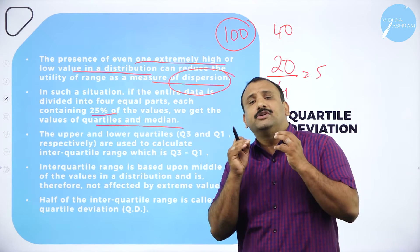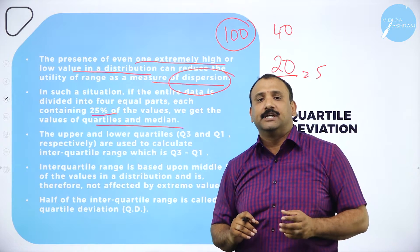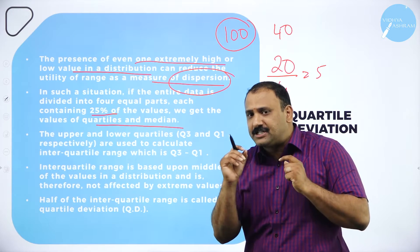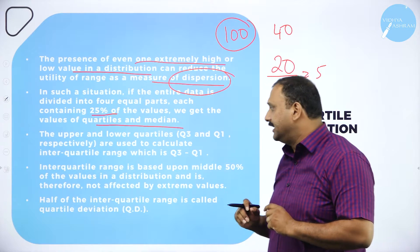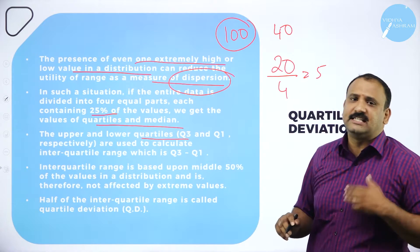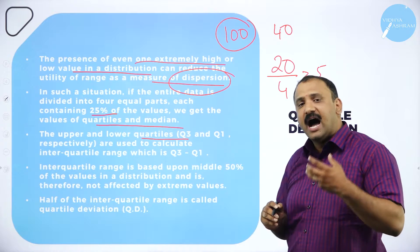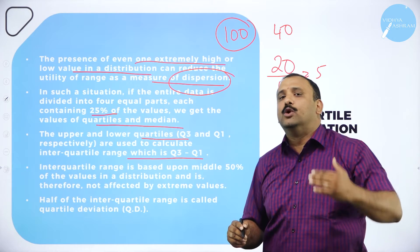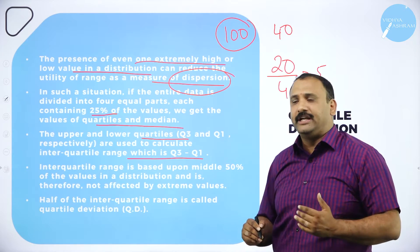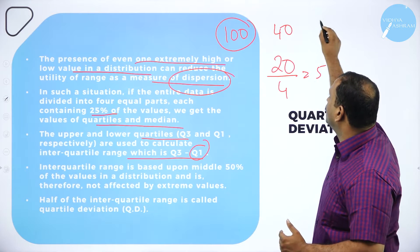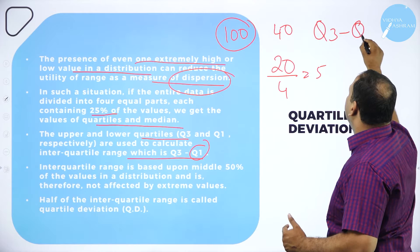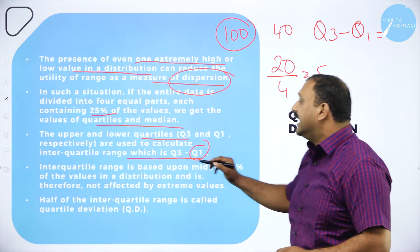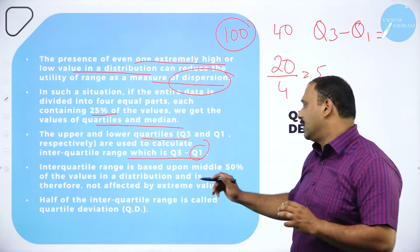In order to avoid confusion caused by extreme values, we divide the entire data set into four parts and measure the quartile value and the median. The upper and lower quartiles — Q3 and Q1 respectively — are used to calculate the quartile range. Q3 minus Q1 gives the interquartile range, which is very important.